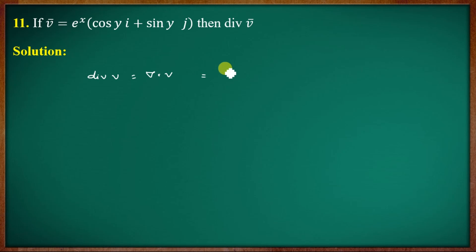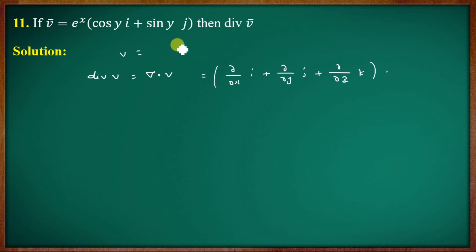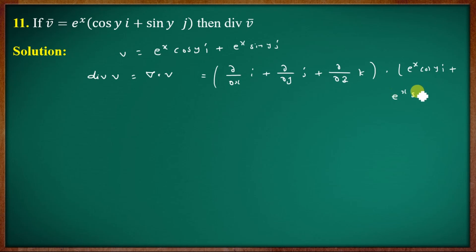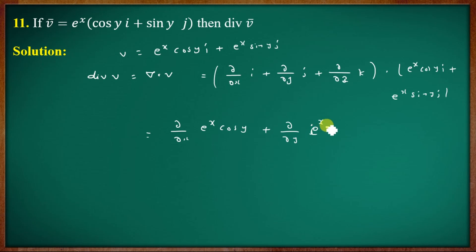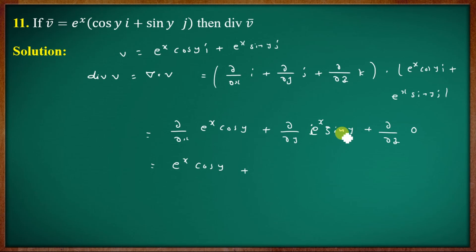For divergence: div V = ∇·V = (∂/∂x)i + (∂/∂y)j + (∂/∂z)k dotted with V. Here V = e^x·cos(y)i + e^x·sin(y)j. Taking ∂/∂x of e^x·cos(y) plus ∂/∂y of e^x·sin(y) gives the divergence.